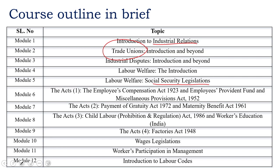In Module 7, we'll continue with the Payment of Gratuity Act, 1972, and the Maternity Benefit Act, 1961. In Module 8, we continue with the Child Labor Prohibition and Regulation Act, 1986, and the Workers' Education Act, specifically with respect to the Indian context. In Module 9, we'll look into the Factories Act specifically.